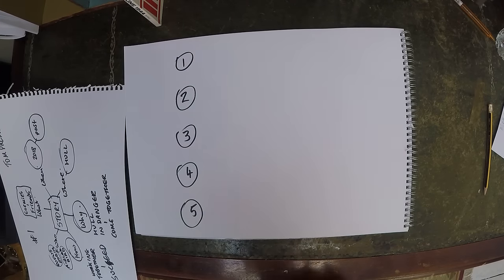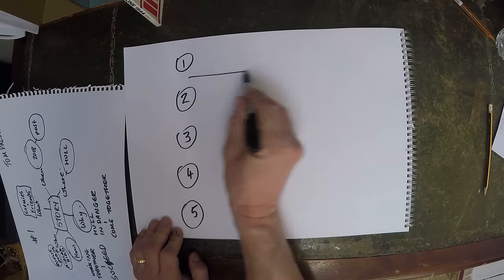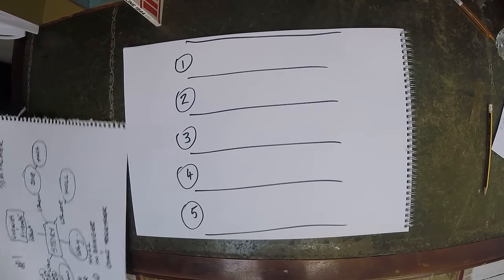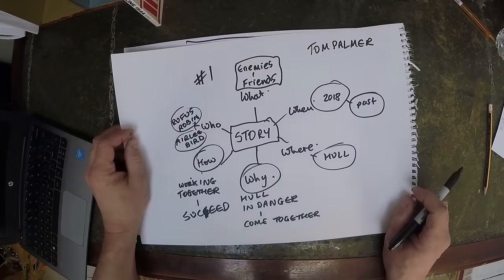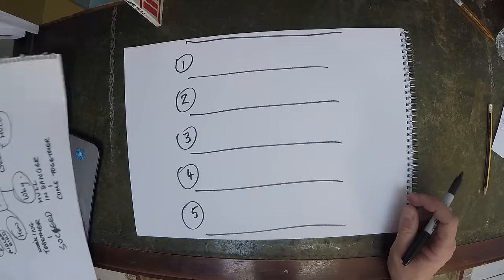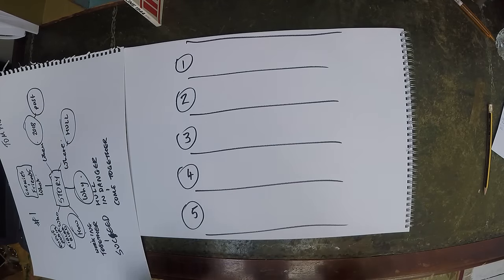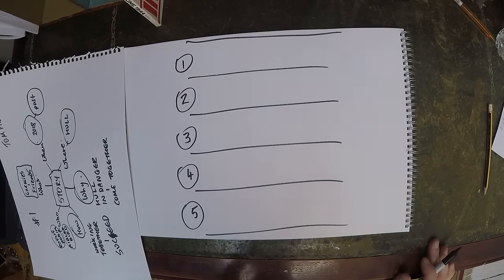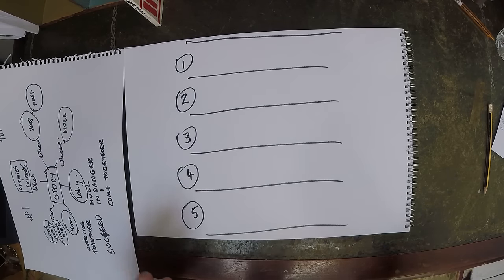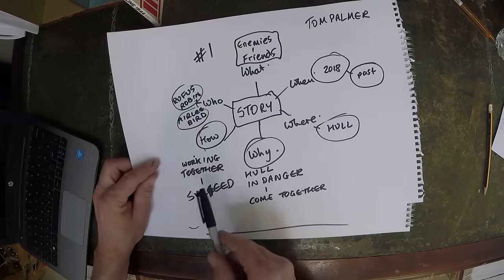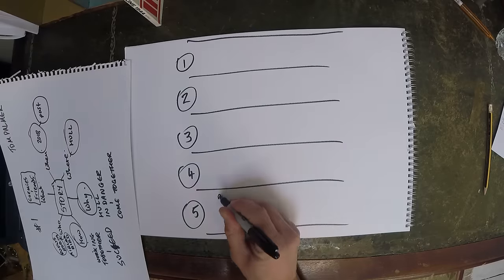I need to break this story down into five parts. I've got the six questions as a basis, and now I need to make a plot that's interesting — with a beginning, a middle, and an end. I always like to start at the end, because if you know what happens at the end it helps you make a better beginning and a more exciting story.